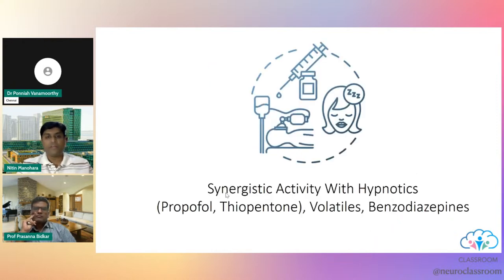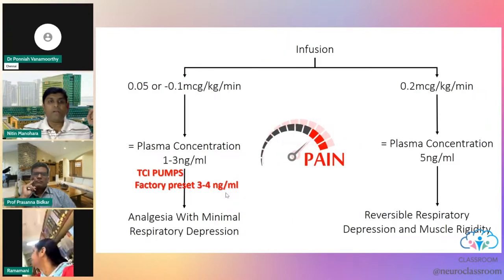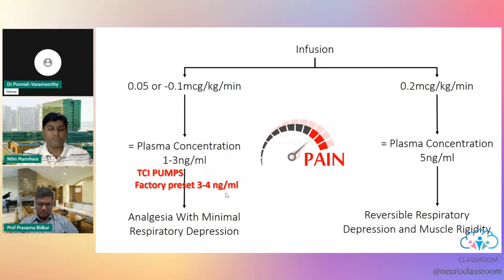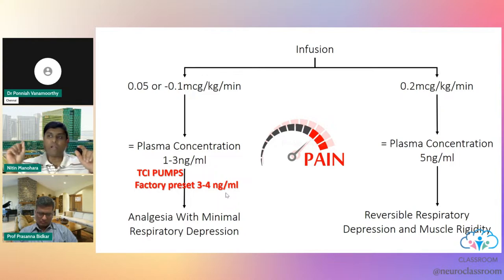Remifentanil has synergistic activity with other hypnotics like propofol, volatile agents, and benzodiazepines, significantly reducing their requirements. When you achieve a plasma concentration of around 1 to 3 ng/ml, you get good analgesia with minimal respiratory depression. At higher doses you get reversible respiratory depression with muscle rigidity. Most TCI pumps have a factory preset of about 3 to 4 ng/ml — this is the desired plasma concentration when using remifentanil.